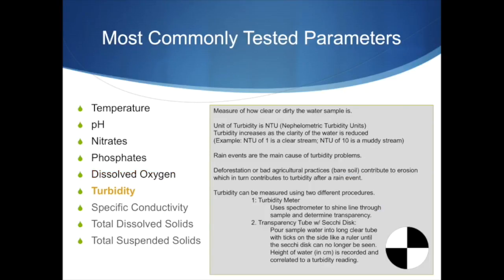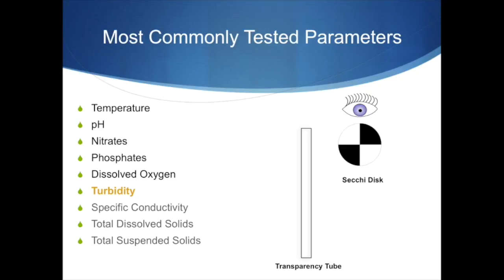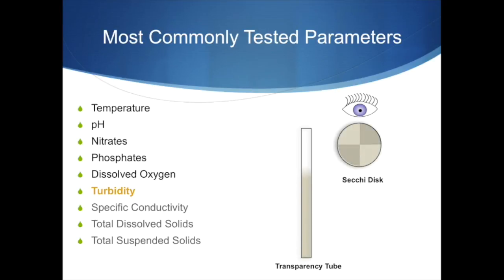Turbidity is a measure of how clear or dirty a water sample is, and it is measured by using a transparency tube. The bottom of the transparency tube has a Secchi disc. When you start filling it up with water, the colors at the bottom start disappearing because of dissolved solids, minerals, and other waste in the water. Once you stop seeing the bottom, you measure the height in centimeters.